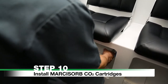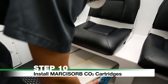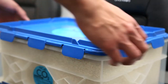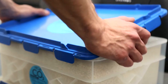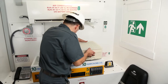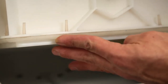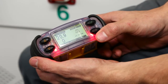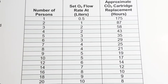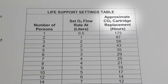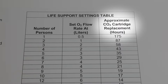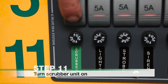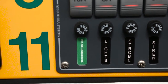Step 10: Install Marcosorb CO2 cartridges. Remove three Marcosorb carbon dioxide cartridges from their storage location and remove them from their packaging. The cartridges will slot into place with the rubber seal on the bottom side. Replace the cartridges when the gas monitor reads CO2 as being greater than 1%, or as indicated by the life support settings table on the safe haven wall. Step 11: Turn the scrubber unit on by activating the switch marked Scrubber on the front panel.